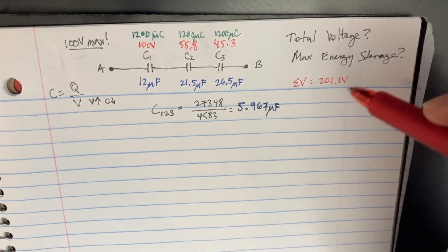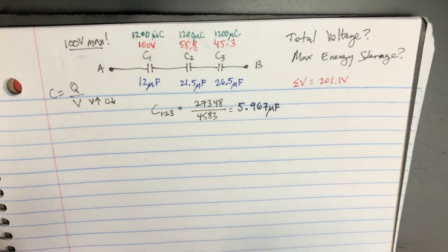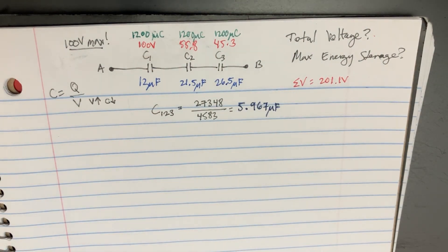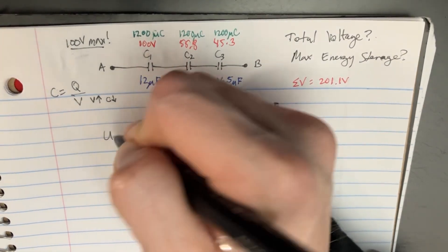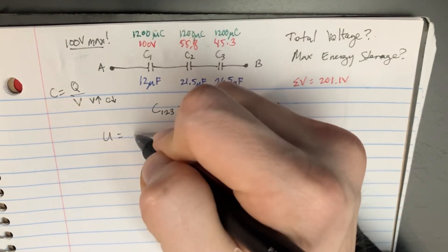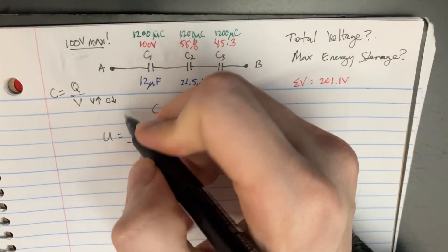Now for the max energy storage, we kind of have to look back at this. Because the max energy storage, U, potential energy, is supposed to be Q squared divided by 2C.